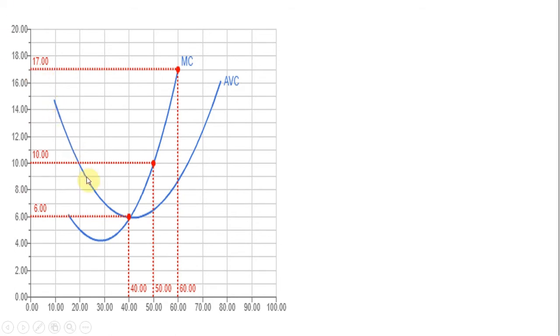This competitive firm's average variable cost is this U-shaped curve here, and its marginal cost curve intersects average variable cost at its minimum point, at the minimum point of average variable cost, and rises above it.